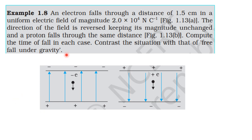Electric Fields and Charges — Topic Learned Example. An electron falls through a distance of 1.5 cm in a uniform electric field of magnitude 2×10⁴ Newton per Coulomb. The direction of the field is reversed keeping its magnitude unchanged, and a proton falls through the same distance. Compute the time of fall in each case and contrast the situation with that of free fall under gravity.